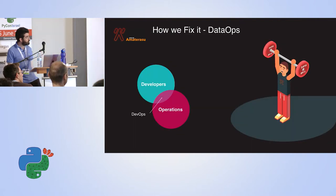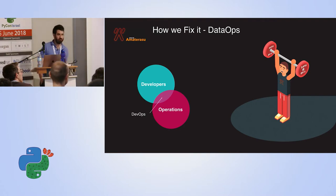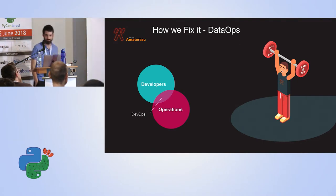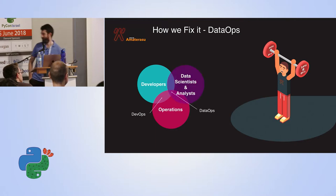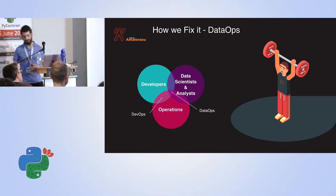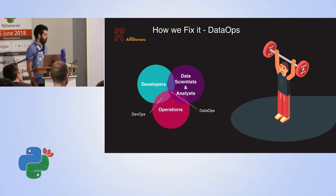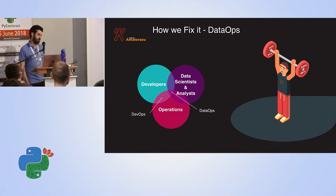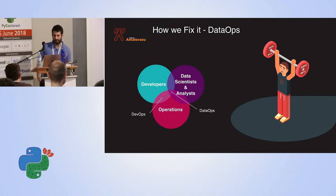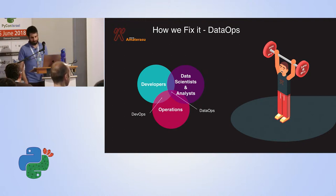This is where we come in. We know we have development and operations, and in the middle we have DevOps. This is something we've practiced for years — it's nothing new. We have all kinds of solutions like Chef, Puppet, Jenkins, Ansible, whatever. This thing is solved. However, when you put data science into this equation, things aren't that simple. Data scientists are usually not engineering guys and obviously not operations guys, and the last thing you want is your data scientist deploying stuff to production — that's probably going to end up as a disaster.